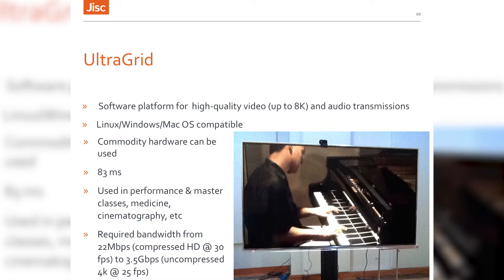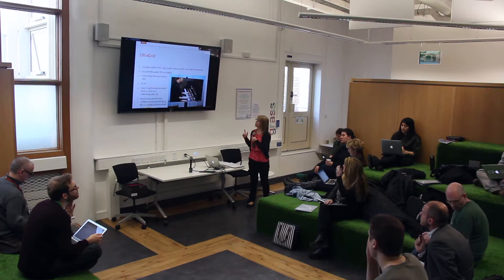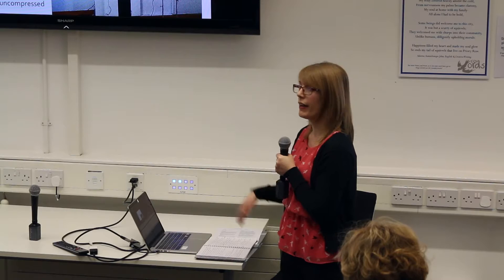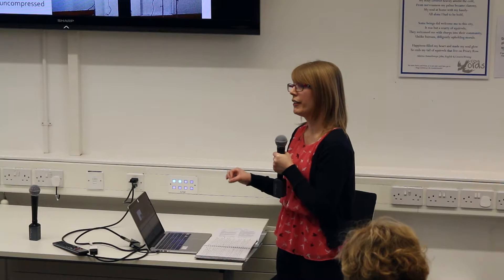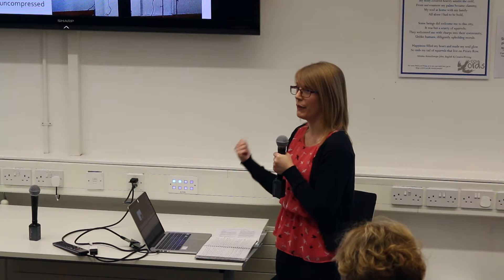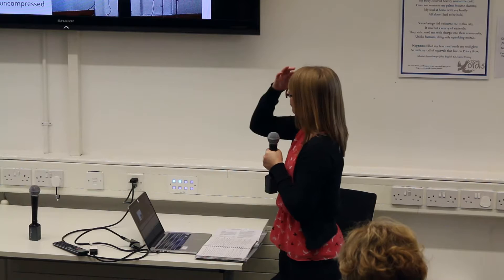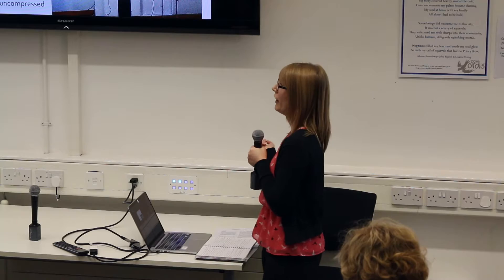UltraGrid is another technology. It was created by an organisation called CESNET, who are our counterparts — the National Research and Education Network in the Czech Republic. It's software that can run on Linux, Windows, and Mac OS X, and you can use any hardware you want. It's command line driven, so it doesn't have a nice interface on top, but if you're comfortable with command lines this could work for you. You can have high quality video up to 8K. For compressed HD, you need about 22 megabits, all the way up to about 3.5 gigabits, depending on your network capacity.